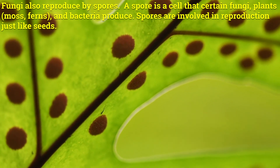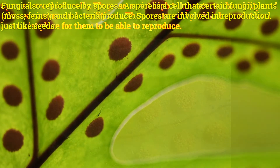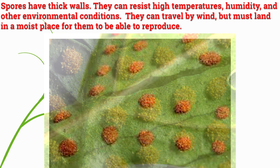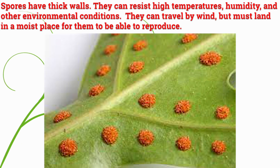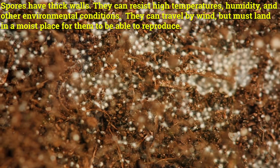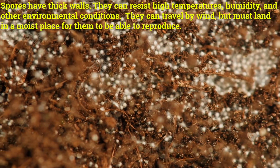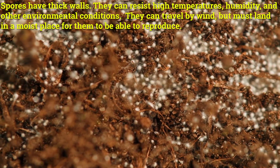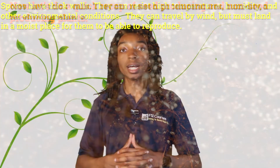Spores are involved in reproduction just like seeds. Spores have thick walls — they can resist high temperatures, humidity, and other environmental conditions. They can travel by wind, but must land in a moist place for them to be able to reproduce.